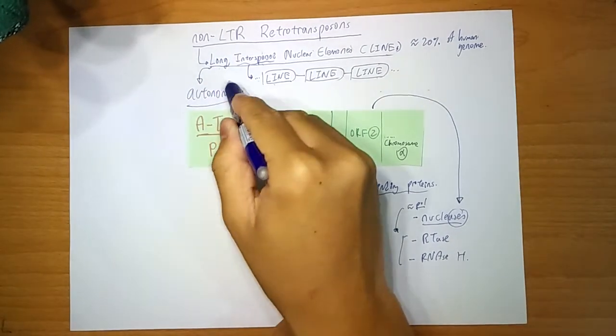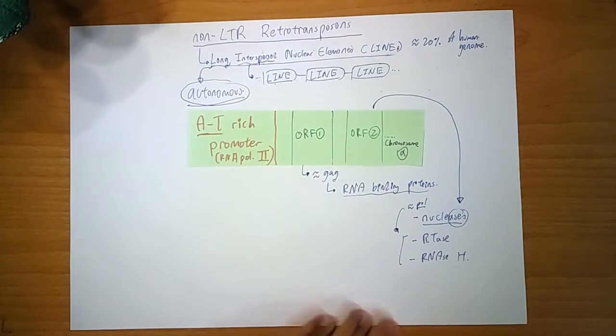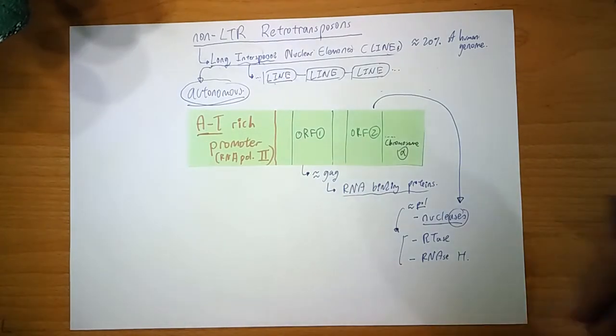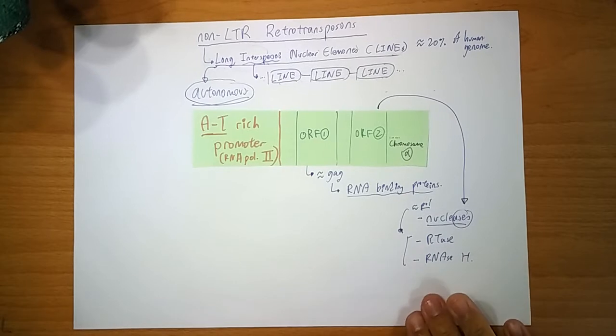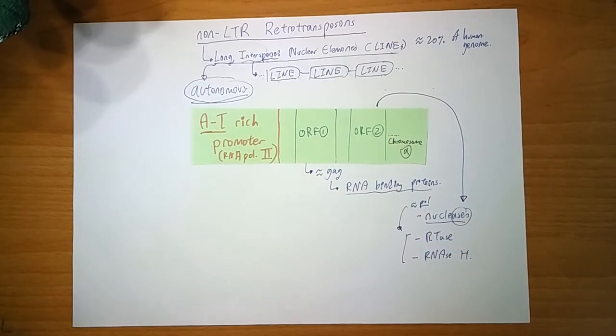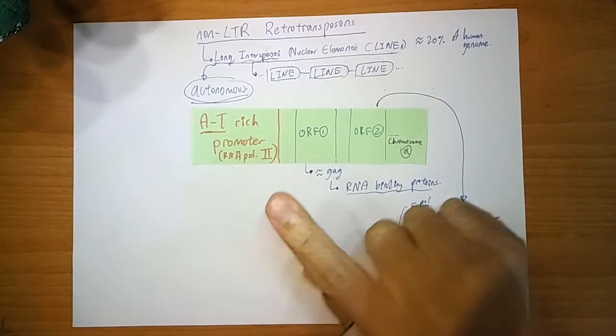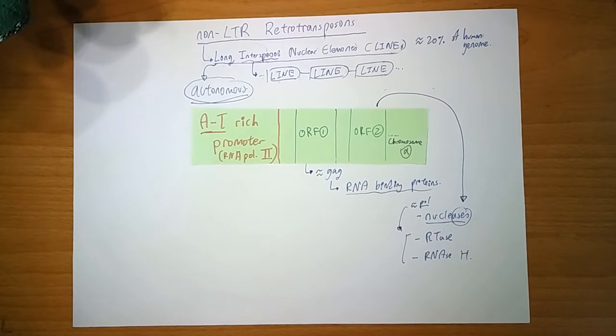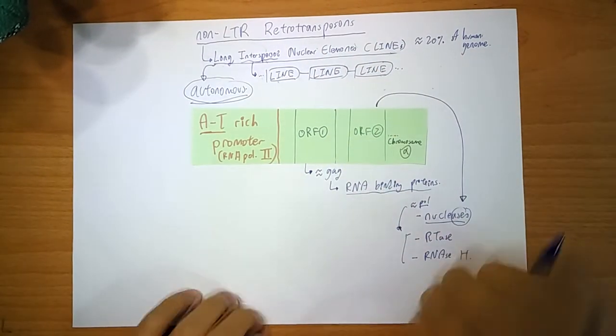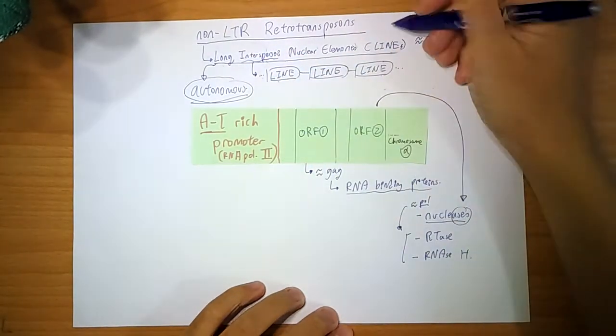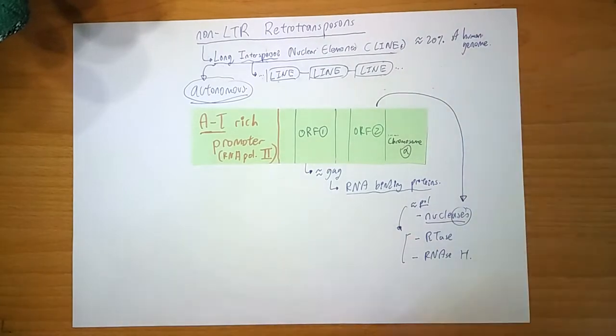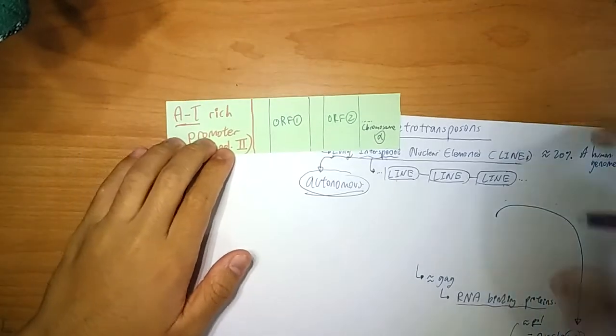And because it has these enzymes, it's autonomous. Meaning that it can move on its own. So you can jump here and jump there without the help of any other transposons. The short version is not autonomous. And this one will help the short version move. The SINE. But let's take a look at how the LINEs move first.